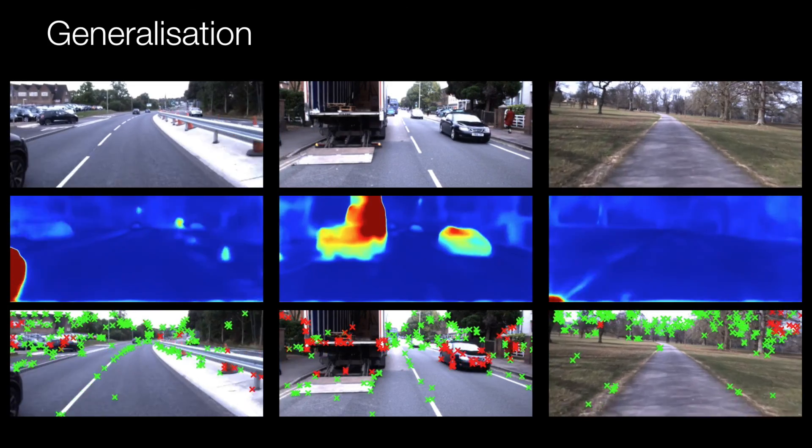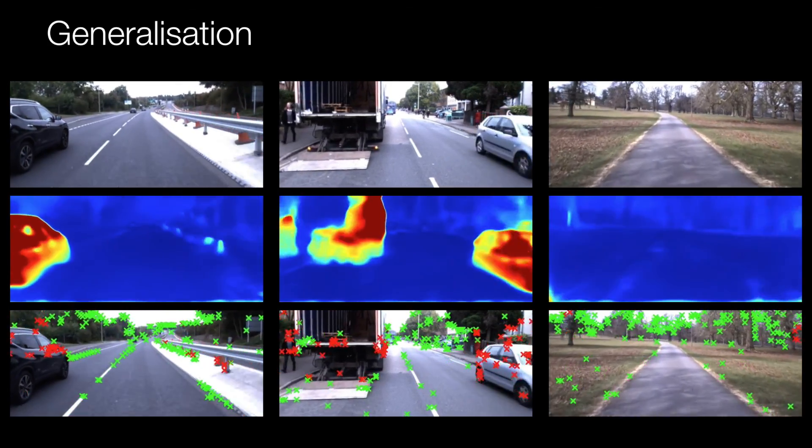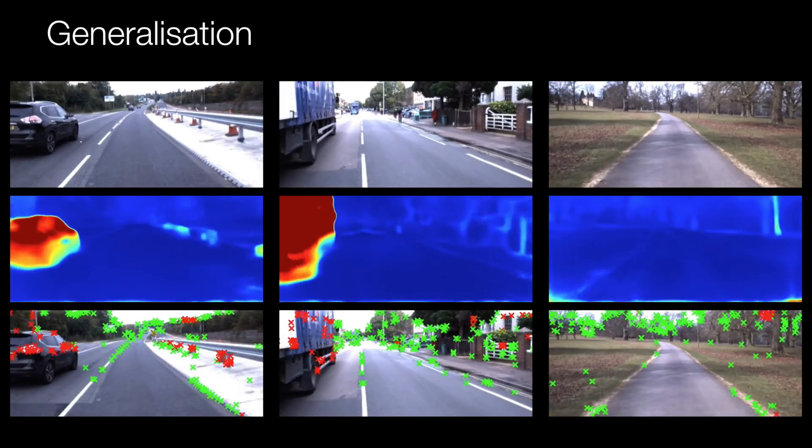Our system also generalizes to locations never visited by the survey vehicle, for example highway, suburban and rural scenes.